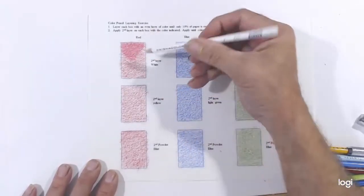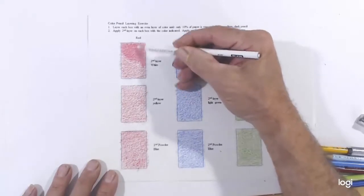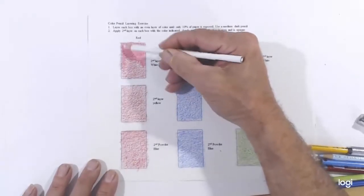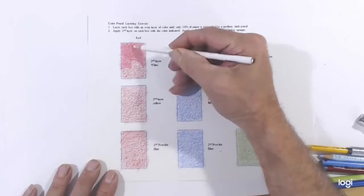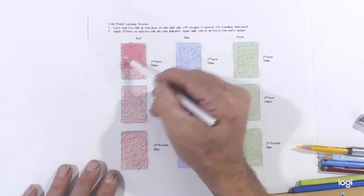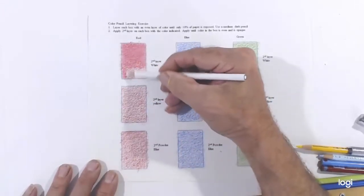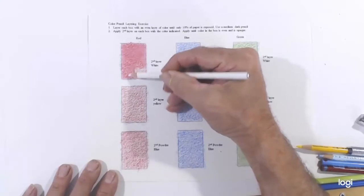My goal will be to apply the color on top of the first color, blend the two colors together, and make the box an opaque color so that I don't see any of the paper underneath. And I make a real solid, even color.